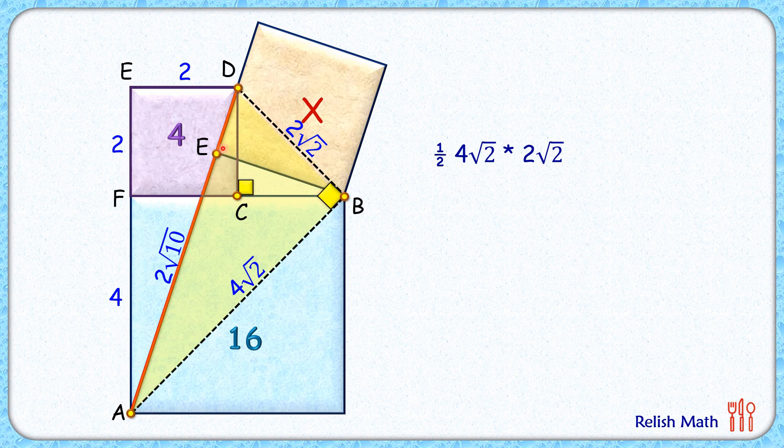So its area also equals half of 2√10 times BE. Now solving this, we'll get the value of BE as 8/√10 centimeters. And the area of this brown square is what we have to find in the form of x.